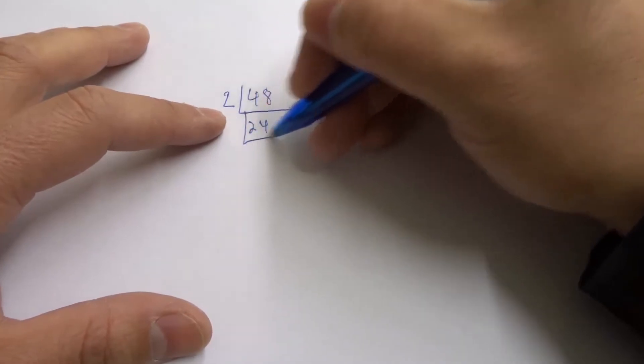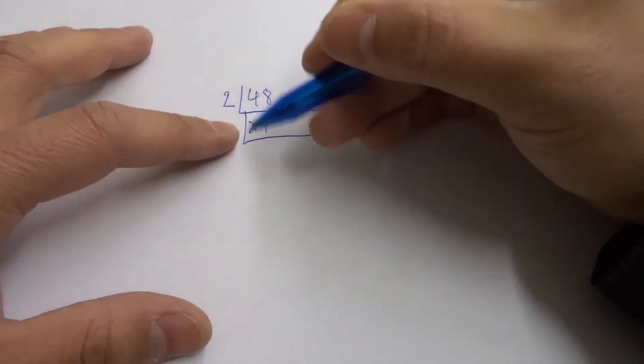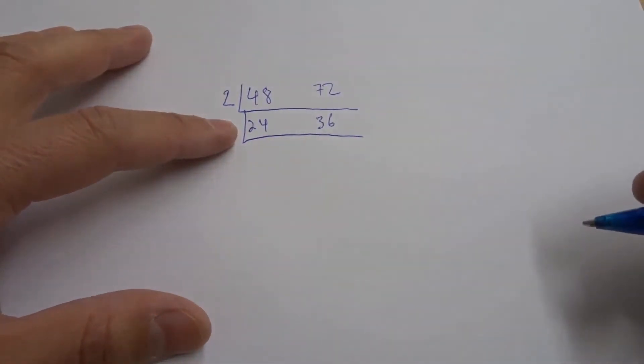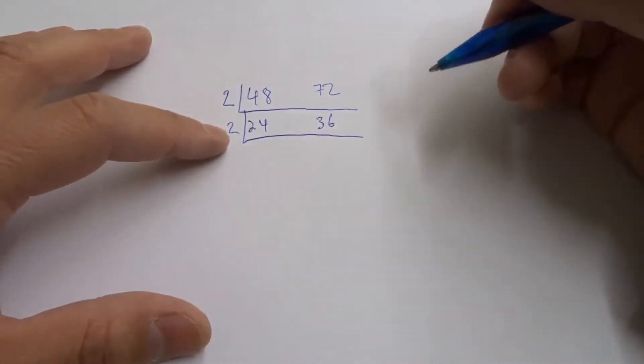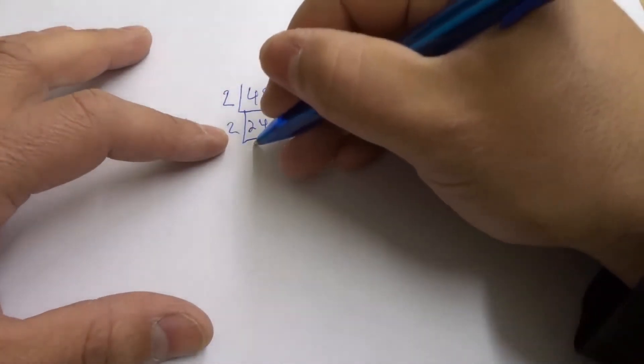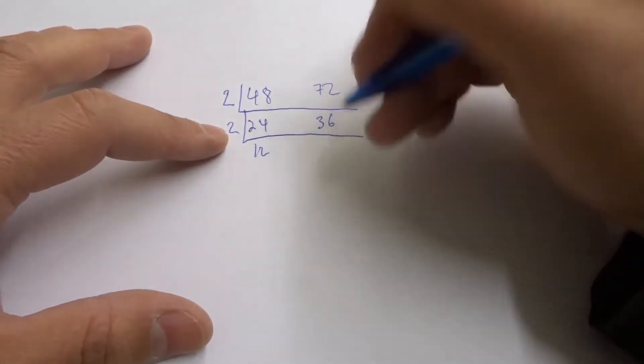Now what we're going to do is we're going to draw another line like that, just like a ladder. We're making a ladder. Now once again we're finding the smallest prime number that goes into both, which is 2. 24 divided by 2 is 12, and 36 divided by 2 is 18.